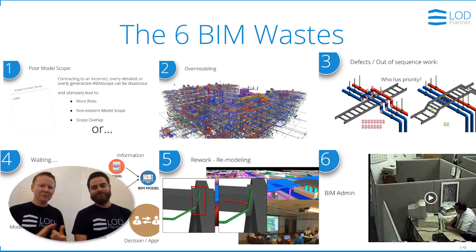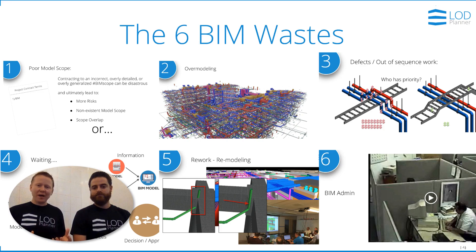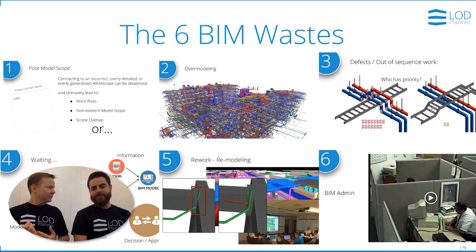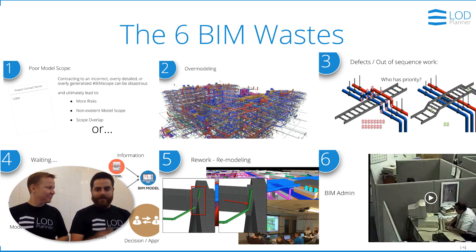So there are the six BIM wastes. First, model scoping — when we don't have a good model scope we end up with miscommunication and contractual problems. Second, over-modeling — modeling something twice, by two teams, or having gaps and scope holes. Third, out-of-sequence work leading to defects, and bad modeling which is a defect as well. Fourth, waiting — for information, model deliverables, decisions, or even for models to open. Fifth, rework — doing something for the second, third, or fourth time, finding yourself in four-hour coordination meetings over and over again.